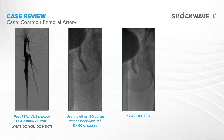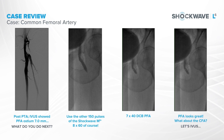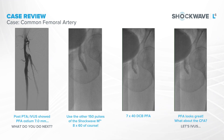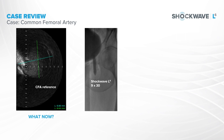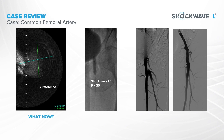This was then followed by a 7x40 DCB, and you can see a spectacular result in that profunda. There was still a little residual disease in the common femoral, and IVUS showed it measured 8x8x8x6.4 millimeters — bigger than we thought. So we dropped a 9x30 L6 balloon on it, and the result was spectacular: less than 10% residual, no dissection, no contrast extravasation, no plaque shift into the profunda.